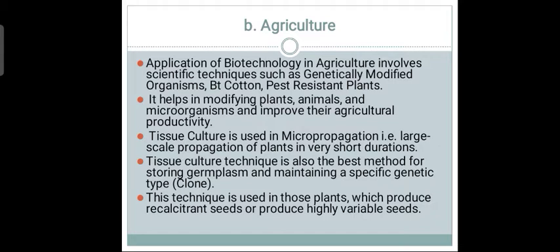Due to micropropagation, a crop that normally takes one year may be produced within six months. Tissue culture is also a best method for storing germplasm and maintaining specific genotypes, or clones. This technique is used for plants that produce recalcitrant seeds. Biofertilizers, biopesticides, genetically modified crops like Bt cotton and Golden Rice are all produced with the help of biotechnology.